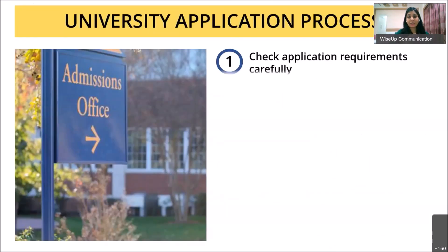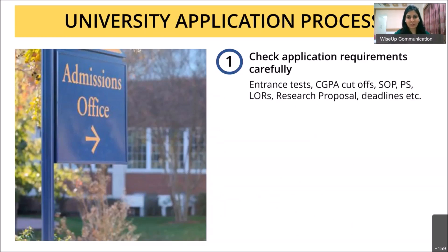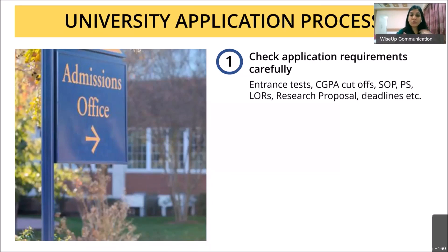Now let's talk about starting the application process. First, check all application requirements carefully. Visit all the websites and note the entrance tests required — like GRE or TOEFL — CGPA cutoffs, and SOP requirements. Most universities require a Statement of Purpose; in Germany it's called a Letter of Motivation but means the same thing. Some universities specify from the beginning exactly what to include in your SOP.